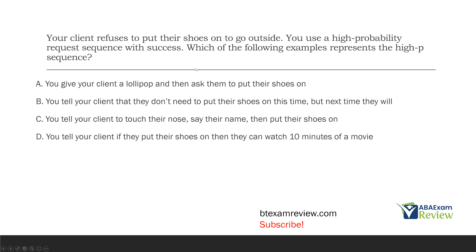Your client refuses to put their shoes on to go outside. You use a high probability request sequence with success. Which of the following examples represents the high P sequence? The high probability request sequence is when we ask our learner to engage in high probability behaviors and then follow with a low probability behavior — we're trying to build behavior momentum.